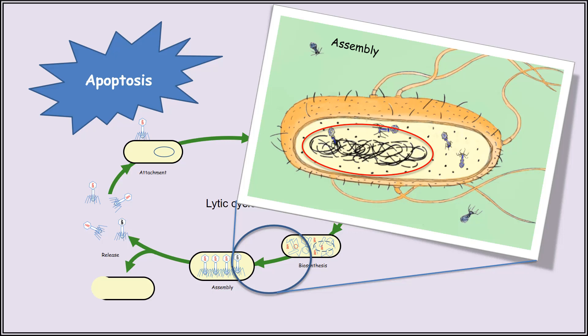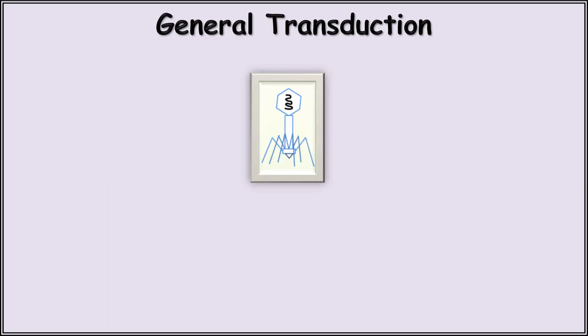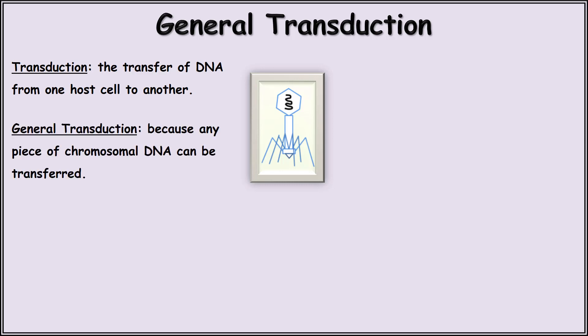One source will be the newly made phage genome, and the second is the fragmented host chromosomal DNA. Because some of the newly formed bacteriophage particles will contain bacterial DNA packaged in the capsid head instead of phage DNA, this will lead to a form of host DNA transfer that we call general transduction. The term transduction simply means the transfer of DNA from one host to another. This form is called general transduction because any pieces of the host's fragmented DNA could have been packaged inside the newly made phage — it is not specific to any given region of the host's DNA. When this phage eventually attaches and injects its DNA load into a new host, it will complete the process of general transduction.